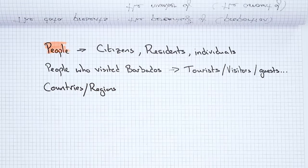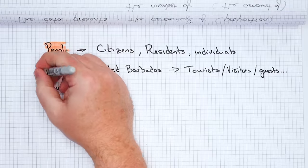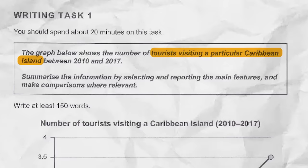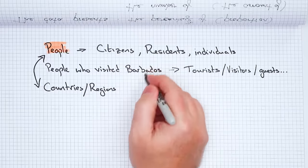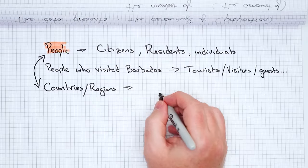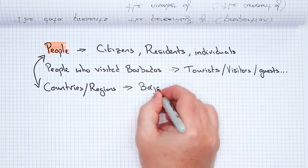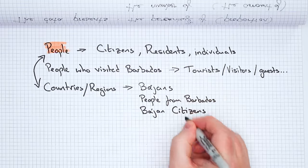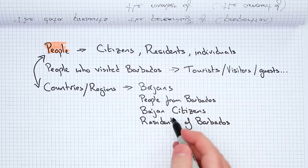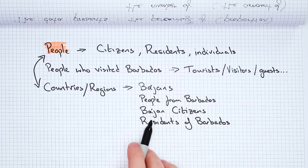Next we have countries or regions, and these two will often be connected. So it would be people visiting this country, or people living in this country, or people from this country. Let's stick with Barbados. People from Barbados — they're not Barbadians, they are Bajans. Not many people know that from outside of Barbados. But you could also say 'people from Barbados,' or 'Bajan citizens,' or 'residents of Barbados,' or 'Bajan residents.' There's a lot you can do here.